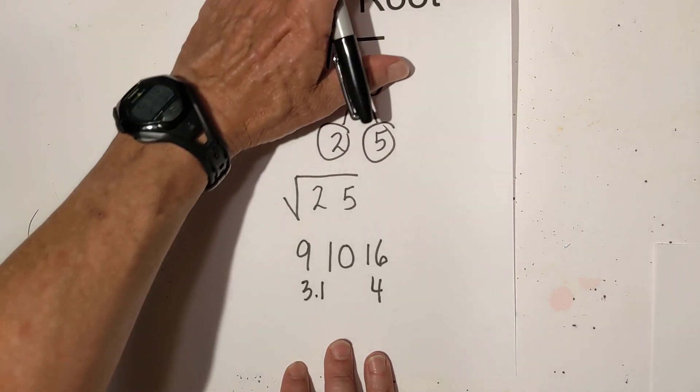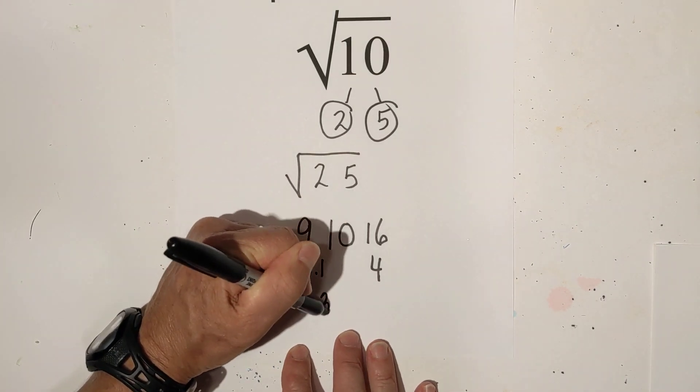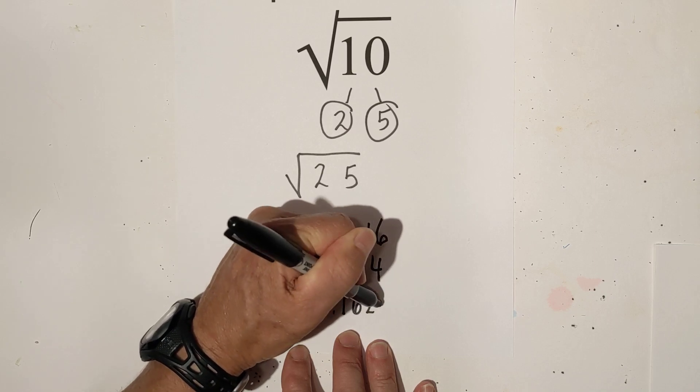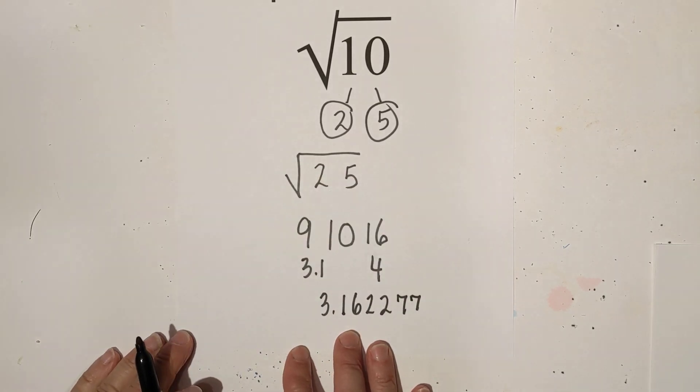And if you actually place it in a calculator then the square root becomes 3.162277 and I only took it to that many places.